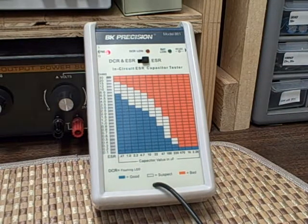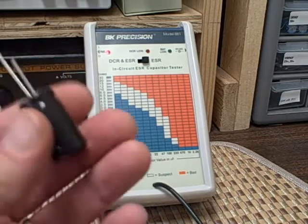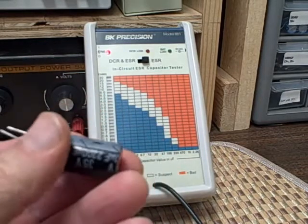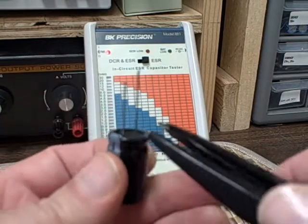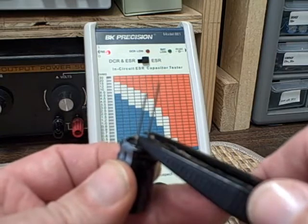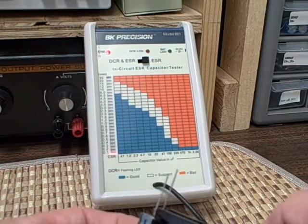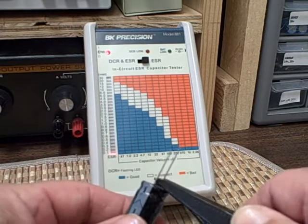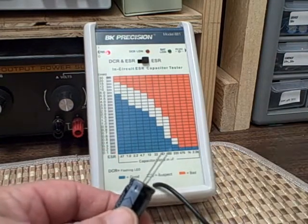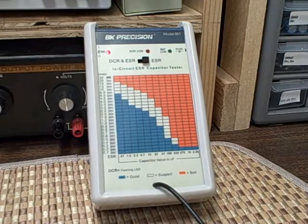Let's take a look at this is a 2200 microfarad 35 volt capacitor came out of my box. We got a light right down here at 0.1, so it's the lowest level. 2200, that's exactly what I would need to consider that a good capacitor.